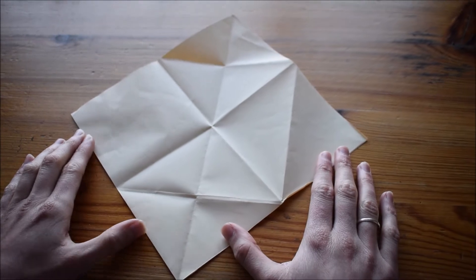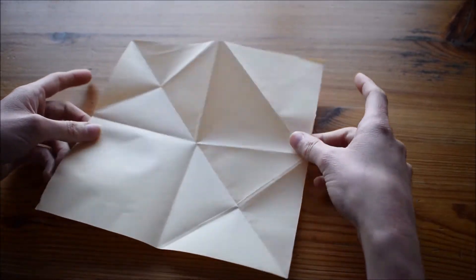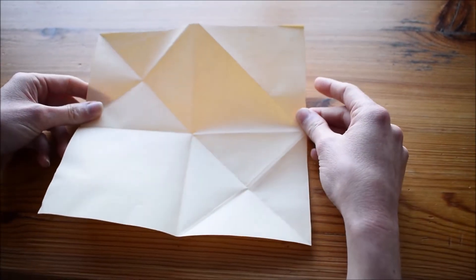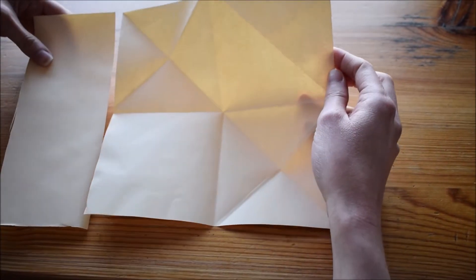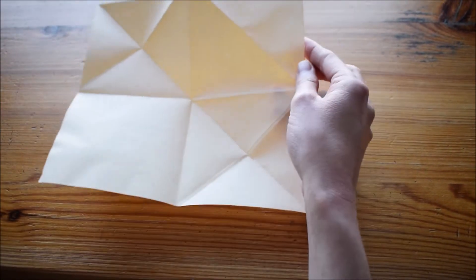Right, so we're going to be making an animal bookmark. You'll need a square of paper, and you can make this out of an A4 sheet of paper. You just need to cut the end off and make it into an exact square.